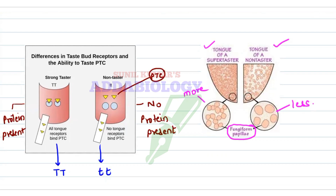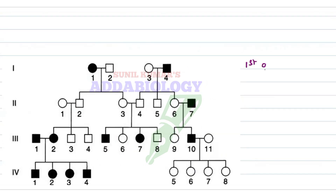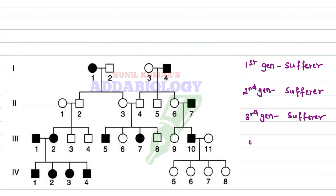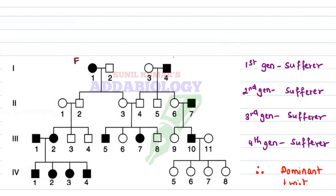Let us understand PTC by the help of a pedigree chart. If you get such a pedigree chart, first look at the generations. In the first generation we see a male and a female who are PTC tasters. In the second generation also we get a PTC taster, and even in the third and fourth generations there are PTC tasters. Since the trait expresses in every generation it is a dominant trait, and since it expresses in both males and females it is an autosomal dominant trait.